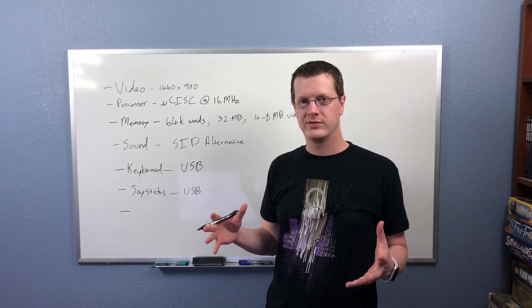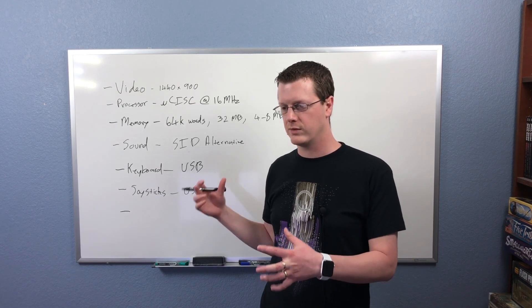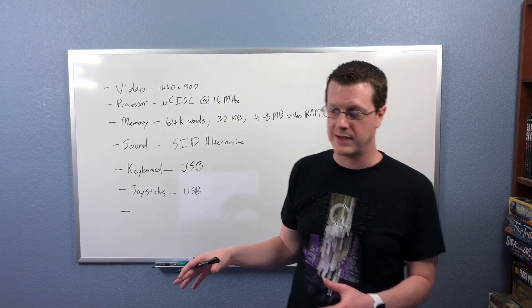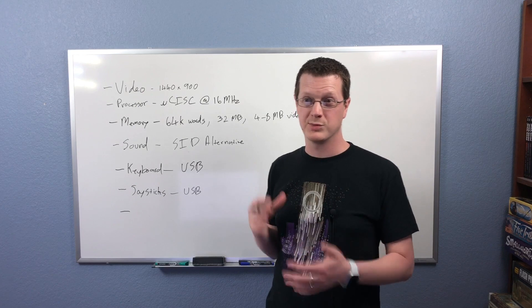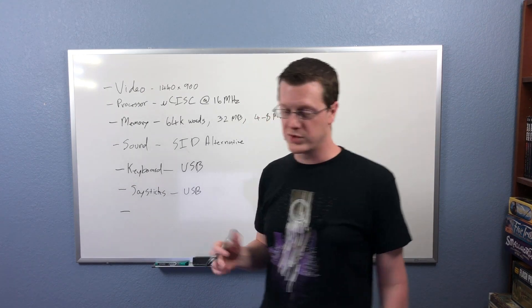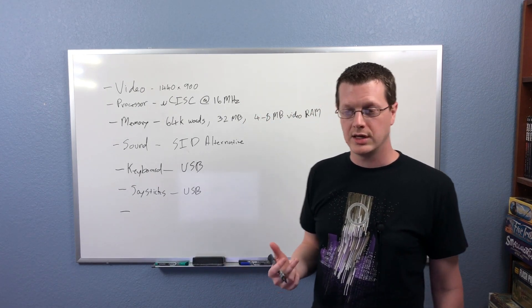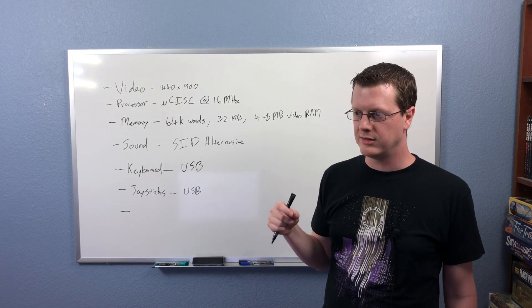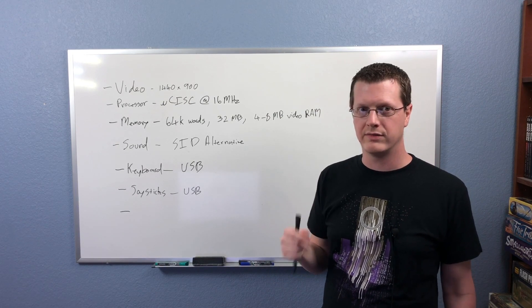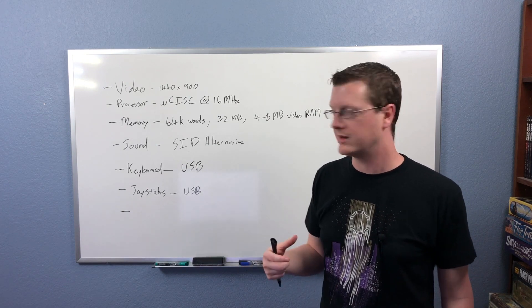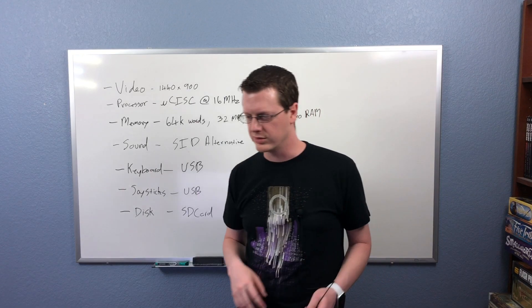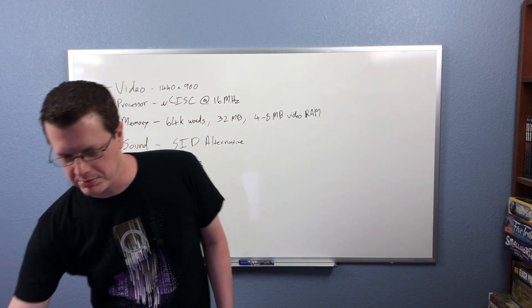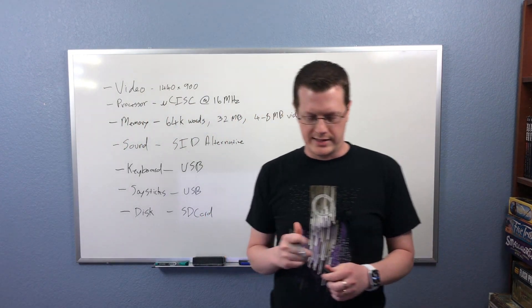The Commodore 64 had a disk drive that could load data off a 5-and-a-quarter inch floppy, or you could load off a cartridge. We need a modern alternative, and the most likely candidate is an SD card. We just plug in an SD card, and the ROM boot process will be able to load data off it. SD cards are actually really simple to interact with, and we can get SD card readers with controllers cheaply.